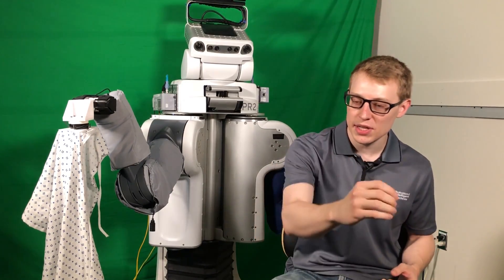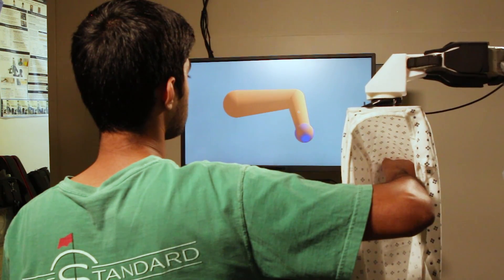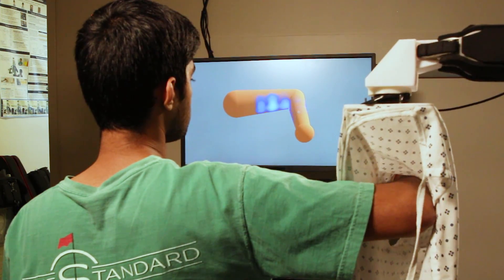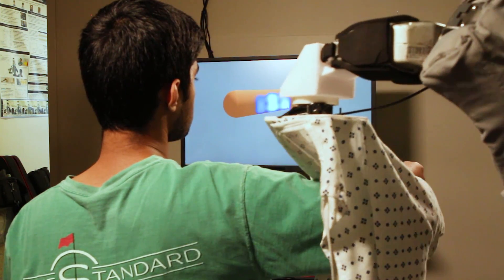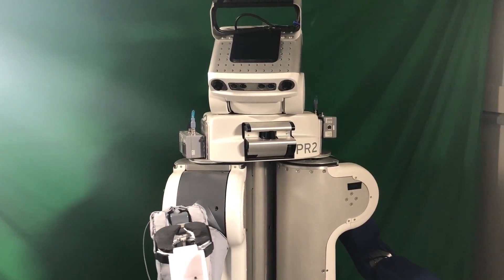And so the robot tries these different ways, predicts into the future how this action is going to affect a person. Is it going to apply a lot of force? Is it going to be more comfortable or less comfortable? And then using all this information, using these predictions, it tries to select an action that's best for the person.